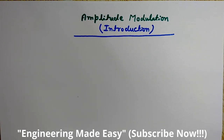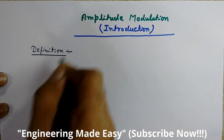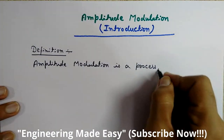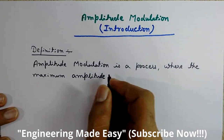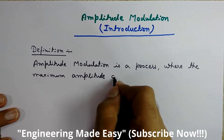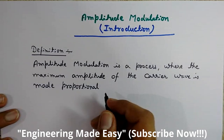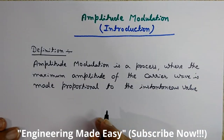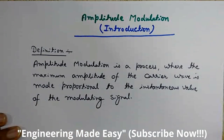First of all I will start with the definition of amplitude modulation. Amplitude modulation is a process where the maximum amplitude of the carrier wave is made proportional to the instantaneous value of the modulating signal.